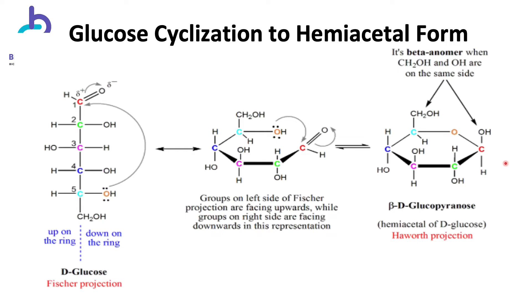From the illustration, groups located on the left side of the backbone in the Fischer projection — for example, the hydroxyl group attached to carbon 3 — will be oriented upwards in the Haworth projection. Subsequently, groups on the right — for example, the hydroxyl group attached to carbon 4 — will be oriented downwards. More significantly, in this process a new chiral carbon is formed from the original carbonyl carbon of the aldehyde functional group; this is now called the anomeric carbon.